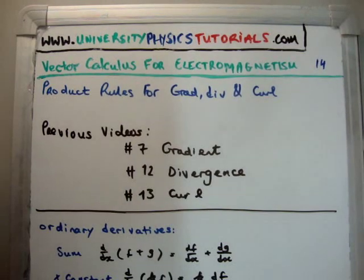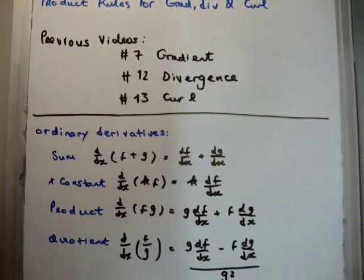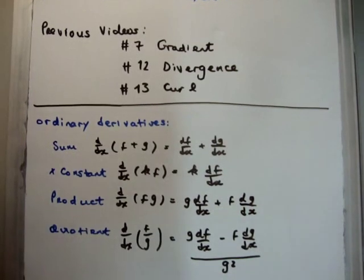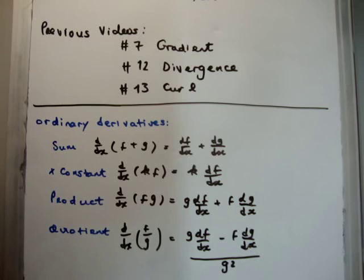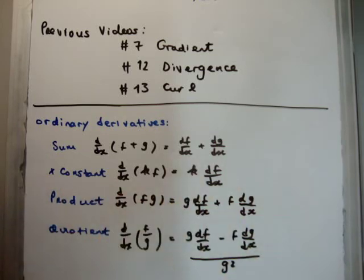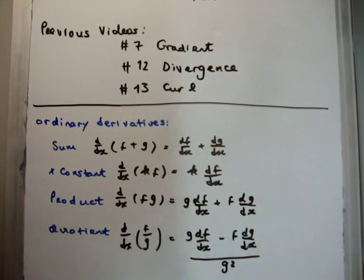If we're talking about ordinary derivatives, the following are the various operations you can do. You can have the derivative of a sum, which is simply the sum of the derivatives. You can multiply a function by a constant and take its derivative — it's the same as multiplying the derivative by the constant. We can take the derivative of a product using the product rule, or take the quotient using the quotient rule for ordinary derivatives. There are analogous formulas for the product rules for grad, div and curl.